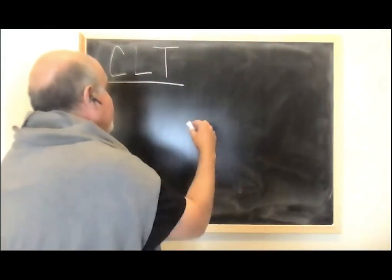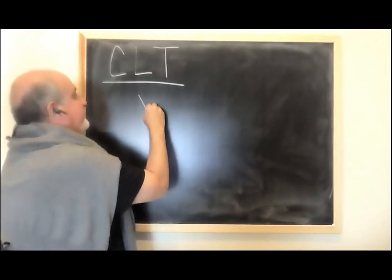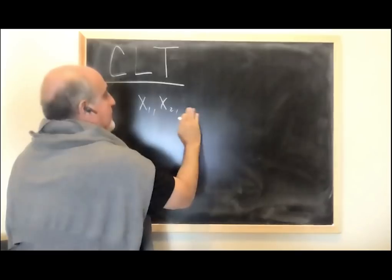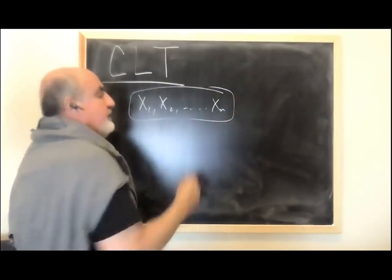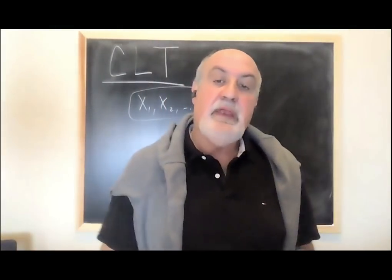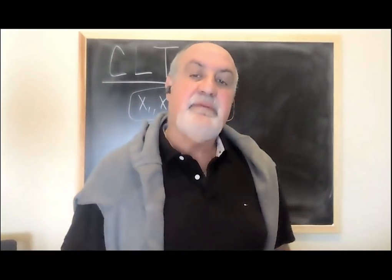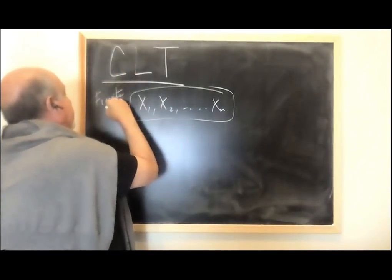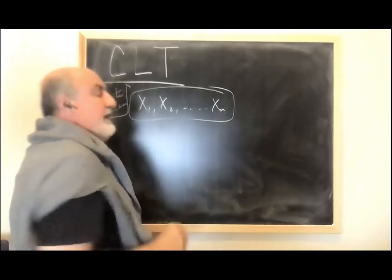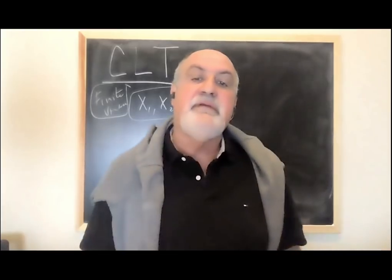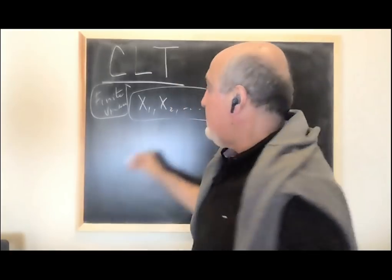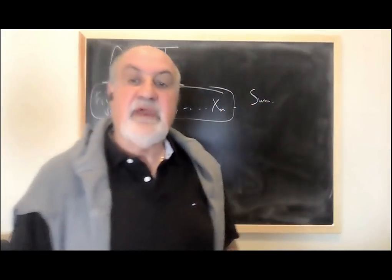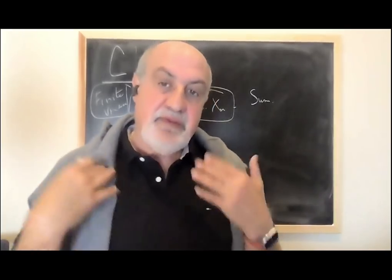So what does it say? There are two ways to look at it. The first one is: I have observations x1, x2, ..., xn drawn from any distribution — assume it's the same distribution, not to complicate things — and with finite variance. Each observation has finite variance. Then the sum, as n becomes large, becomes a Gaussian. That's what it tells you.